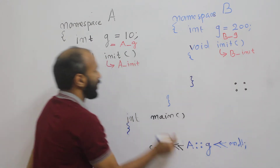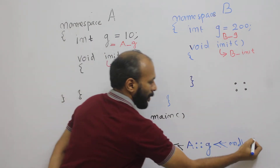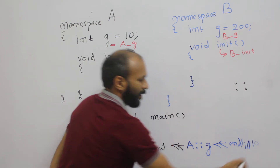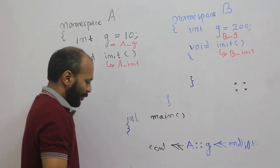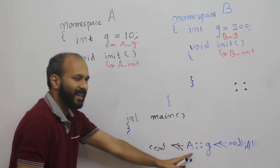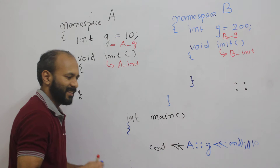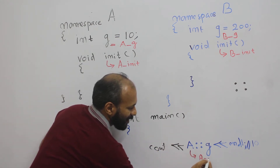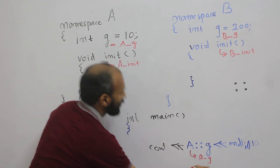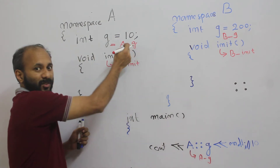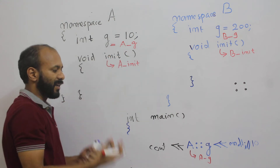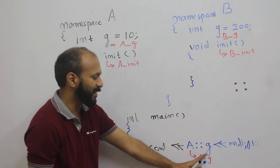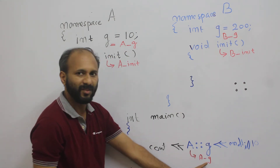The output will be 10. The compiler is internally considering this line as A_g. Now you see there is no confusion at all — the compiler understands this g as A_g.